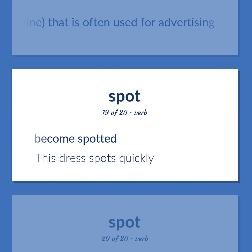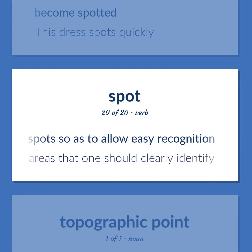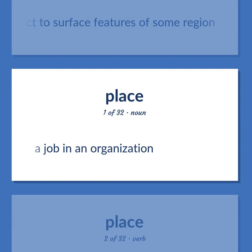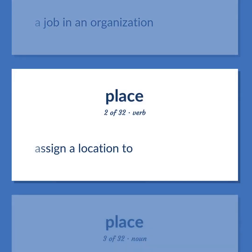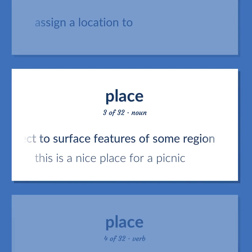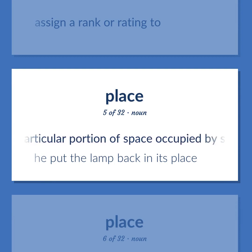Spot (continued): Become spotted — this dress spots quickly. Mark with a spot or spots so as to allow easy recognition — spot the areas that one should clearly identify. A point located with respect to surface features of some region. A job in an organization. Assign a location to. A point located with respect to surface features of some region — this is a nice place for a picnic. Assign a rank or rating to. The particular portion of space occupied by something — he put the lamp back in its place.